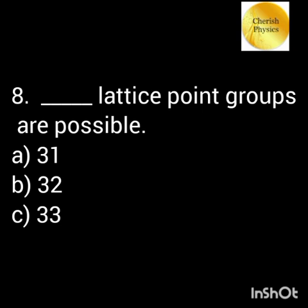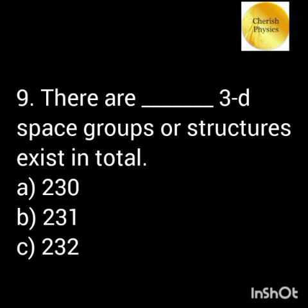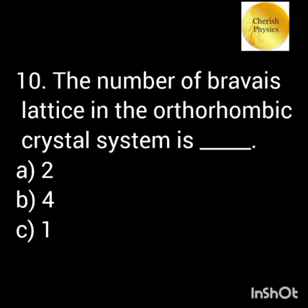How many lattice point groups are possible? There are 230 number of 3D space groups or structures existing in total. The number of Bravais lattices in the orthorhombic crystal system is 4.